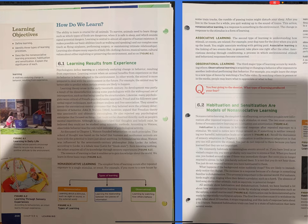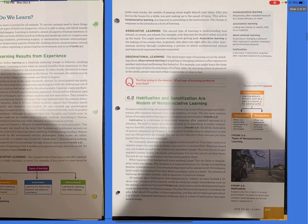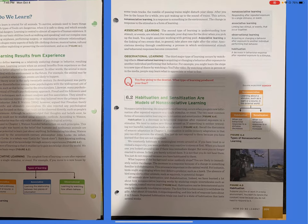Figure 6.2: The essence of learning is that it enables us to gain knowledge about the world. We learn in three basic ways, Figure 6.3. Non-associative learning: the simplest form of learning occurs after repeated exposure to a single stimulus or event. For example, if you move to a new house by some train tracks, the rumble of passing trains might disturb your sleep. After you live in the house for a while, you quit waking up to the sound of trains. This action, non-associative learning, is a response to something in the environment. The change in response to the stimulus is a form of learning.